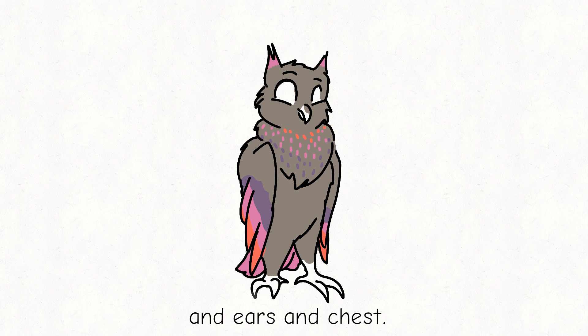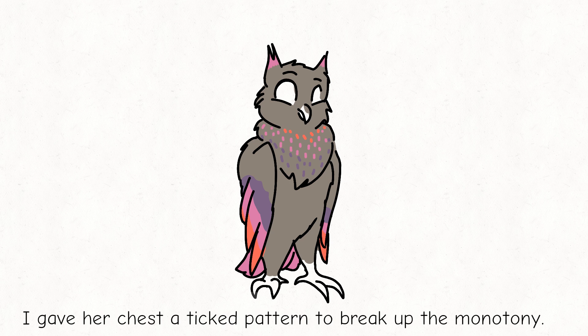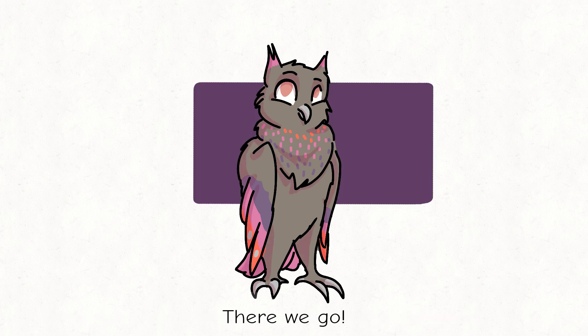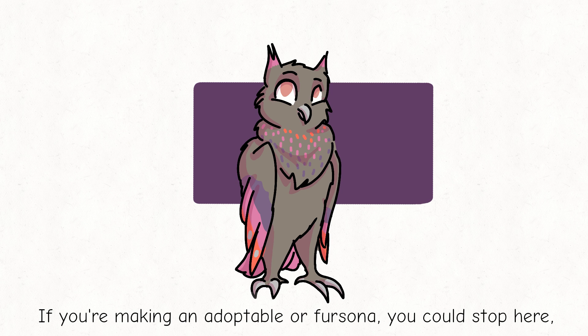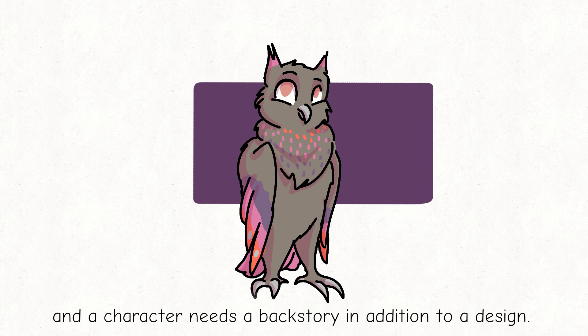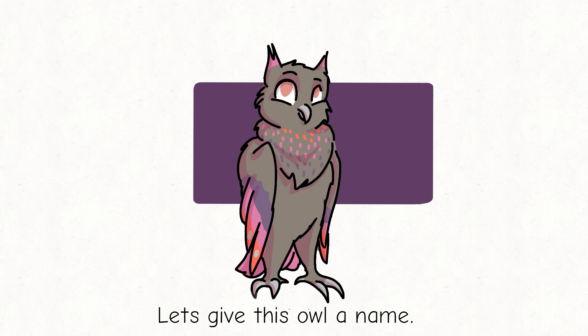I gave her chest a ticked pattern to break up the monotony. I also gave her a grey beak and claws, and pink eyes. If you're making an adoptable or persona, you could stop here. But the title of this video is Making Animal Characters and Personas, and a character needs a name and a backstory in addition to design.